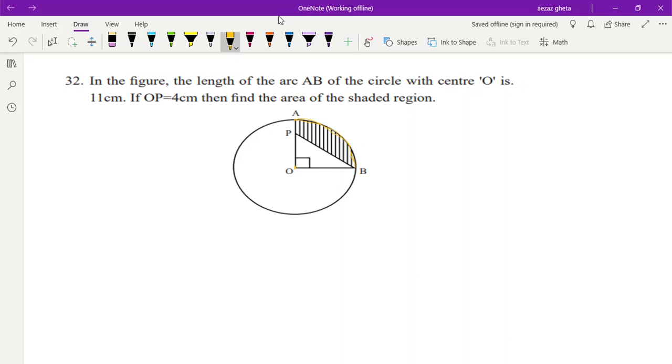Of the circle with center O, here is your center O, is 11 centimeter. What is 11 centimeter? The length of arc is equal to 11 centimeter, correct? If OP is equal to 4 centimeter, okay it is not radius, remember this, then find the area of shaded region.